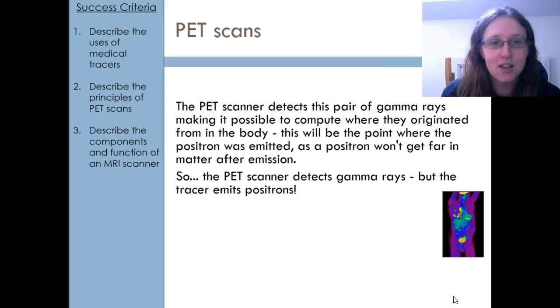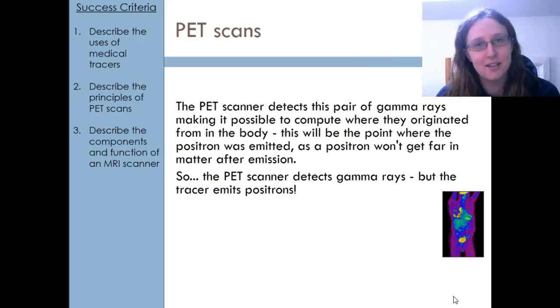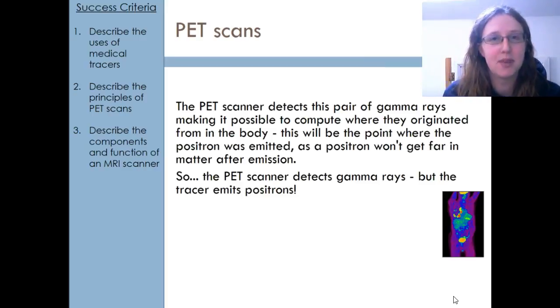Within the PET scanner, we use the gamma cameras to detect these two opposite gamma rays so that we can figure out where they came from. So even though it's called a PET scanner, so it's positron emission, we are detecting the gamma rays that come from the annihilation of a positron with an electron in the human body.